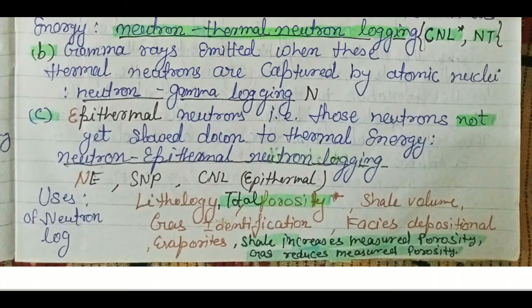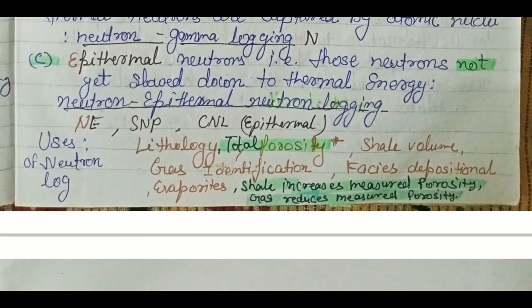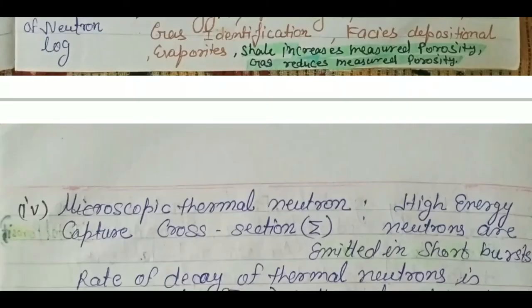The uses of the neutron log are lithology, total porosity, and shale volume — the shale volume from the neutron log is more accurate than from the gamma ray log. Other uses include gas identification, facies determination, and evaporite identification. Note that shale increases measured porosity while gas reduces measured porosity in neutron logs.